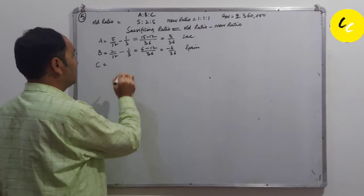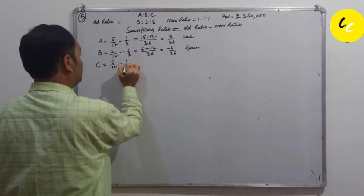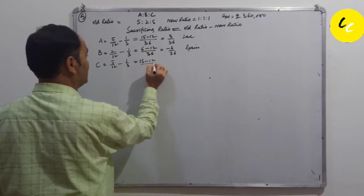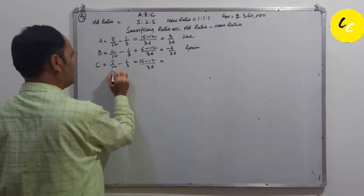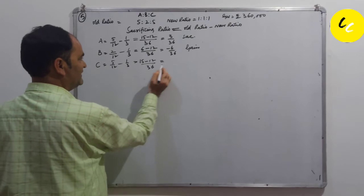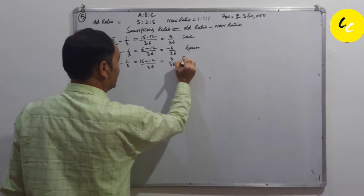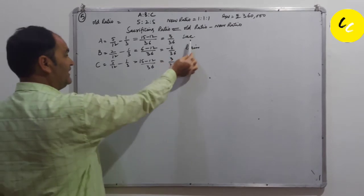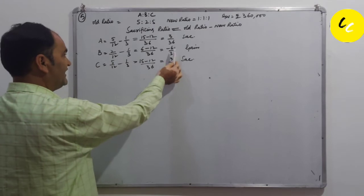C: 5 by 12 again minus 1 by 3, which is equal to 15 minus 12 by 36, which is equal to 3 by 36. Sacrifice. C is also sacrificing. A and C are sacrificing here, and B is gaining.